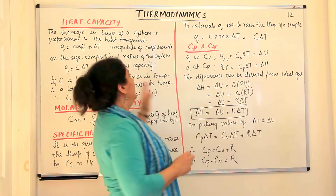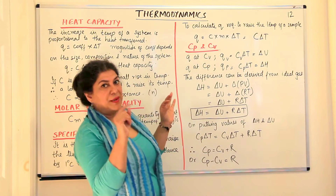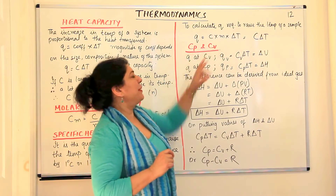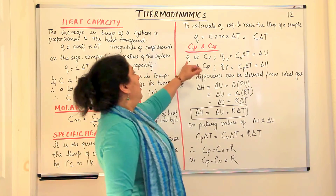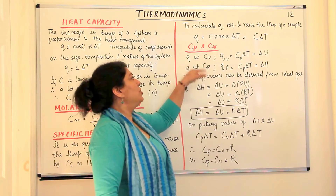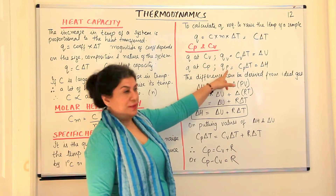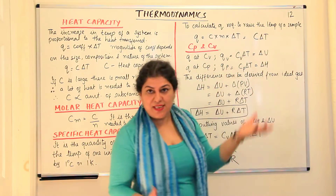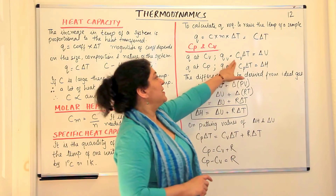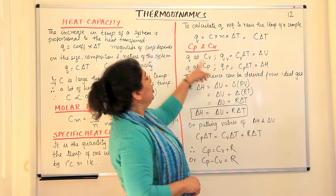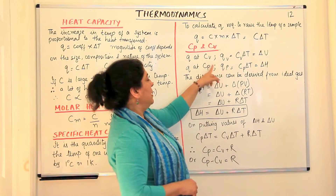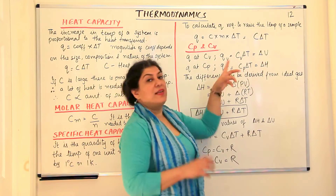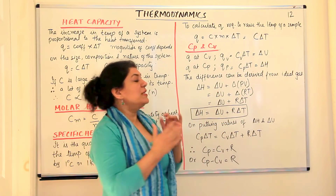Now, heat capacity at constant pressure is Cp, where the subscript p means it is measured at constant pressure. Heat capacity at constant volume is Cv. The heat at constant volume, Qv, equals Cv delta T, and the heat at constant pressure, Qp, equals Cp delta T.